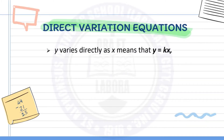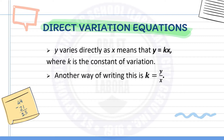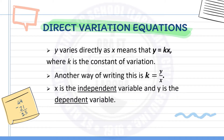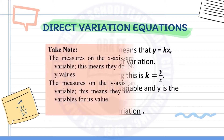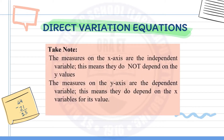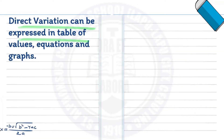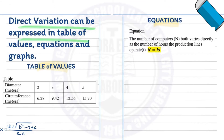The direct variation equations are as follows. Y varies directly as x means that y equals kx, where k is the constant of variation. Another way of writing this is k equals y over x. X is the independent variable and y is the dependent variable. The measures on the x-axis are the independent variable — they do not depend on the y values. The measures on the y-axis are the dependent variable — they do depend on the x variable for their value.